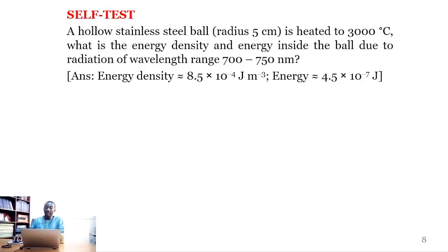If you did this correctly, you should have the energy density as 8.5 times 10 to the power of negative 4 joules per meter cube, and the energy as approximately 4.5 times 10 to the power of negative 7 joules.